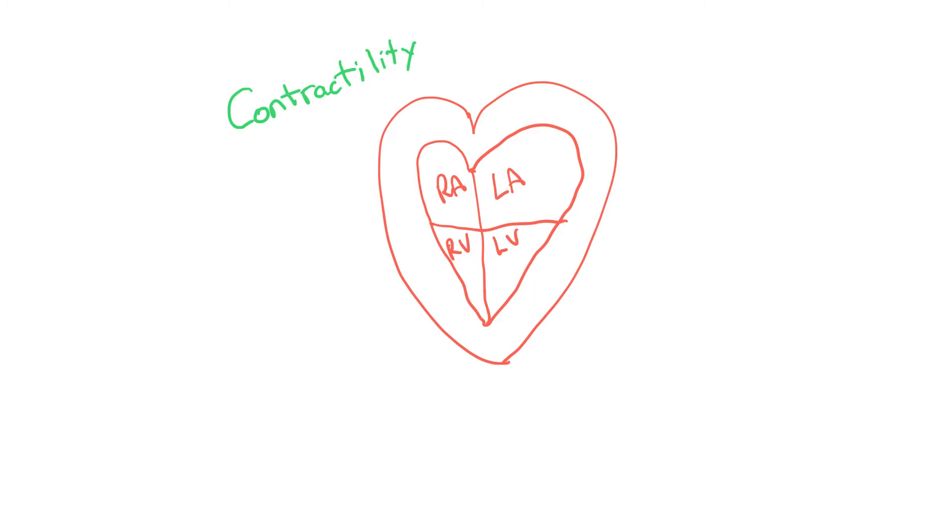The second factor that we look at when we're looking at stroke volume is contractility. And this is the strength of the heartbeat. And heart muscle, I think all muscle, but definitely heart muscle, has a stretching property. So the further it gets stretched, the stronger the contraction.